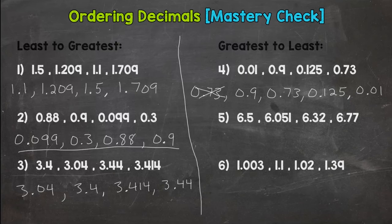0.125 and then 0.01. Next we should have 6.77, 6.5, 6.32, and then 6.051.